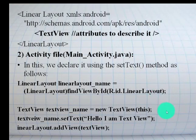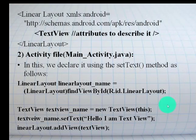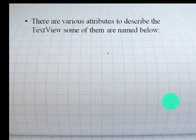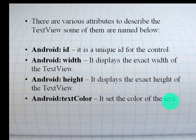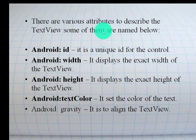Remember, students: TextView is a UI component. There are two ways to create a TextView. TextView does not perform any action when clicked — they are only used for display purposes. If you want to display a message on the Android application, use a TextView.